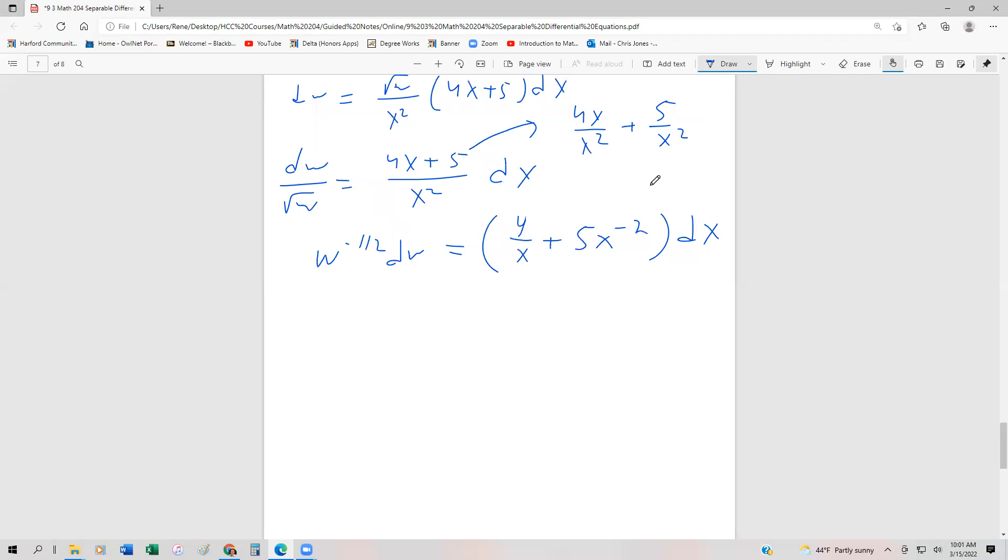On the left-hand side, this becomes w to the one half divided by one half. On the right-hand side, the antiderivative of 4 over x is 4 ln x. Also, 5x to the minus 2, that's going to be plus 5x to the minus 1 over minus 1. And then we have plus our constant of integration.